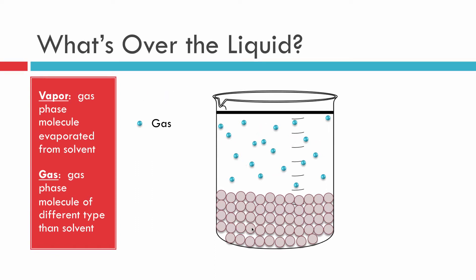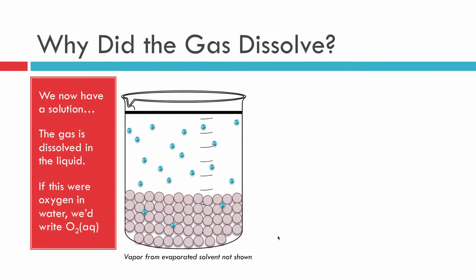What we're really interested in is a foreign gas — a different type of gas altogether — sitting above the liquid. Some of those gas particles are going to find their way into the liquid and become dissolved. Now we have a mixture of the liquid and the gas, so we call it a solution. Before this, it was a pure liquid; now it's a solution.